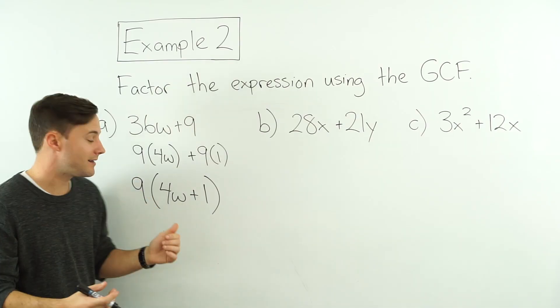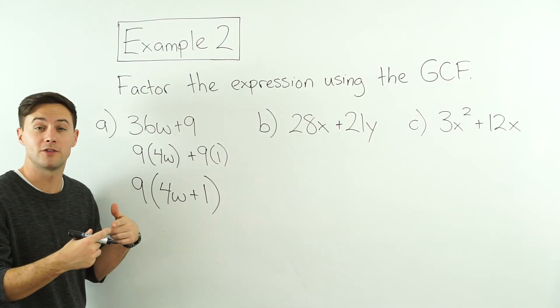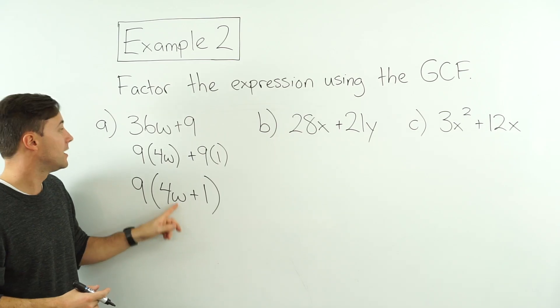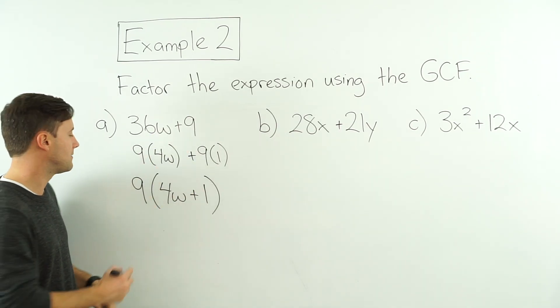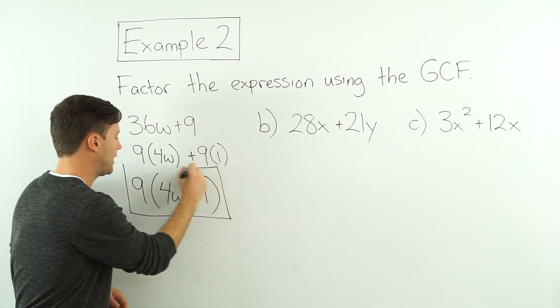And if I want to check it, just do the distributive property. Do the opposite. 9 times 4w is 36w, plus 9 times 1 is 9. There we go. I am happy with that. Let's look at b.